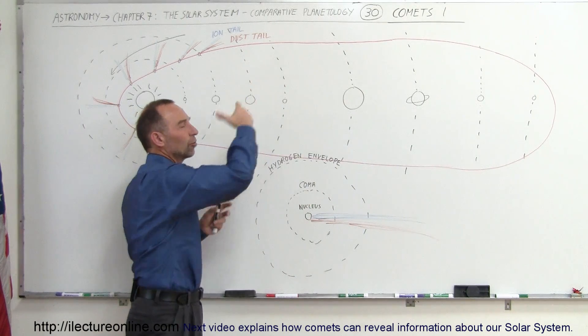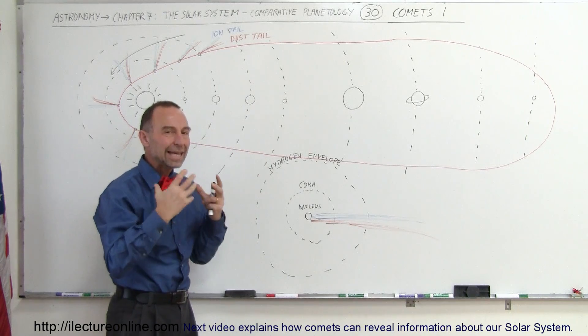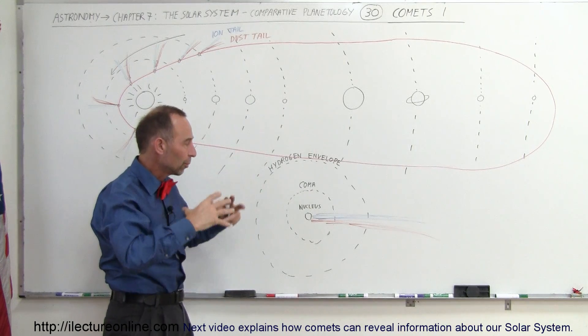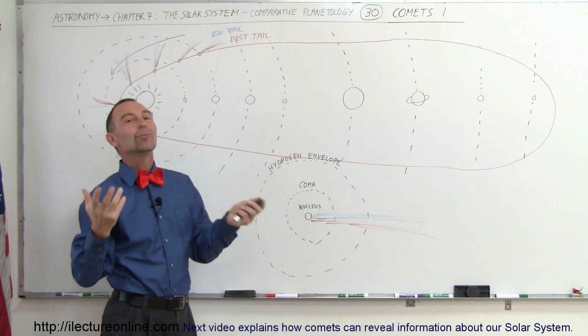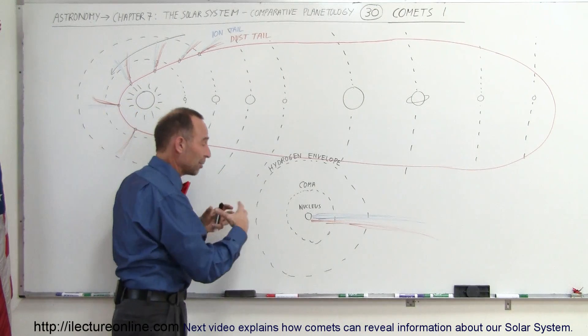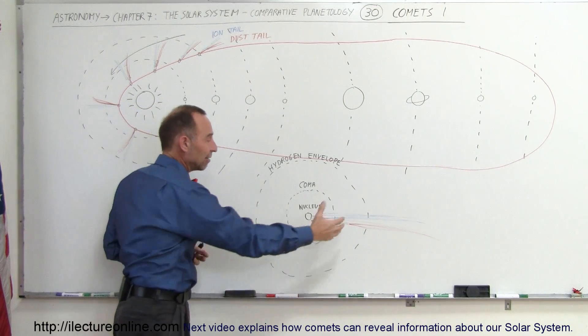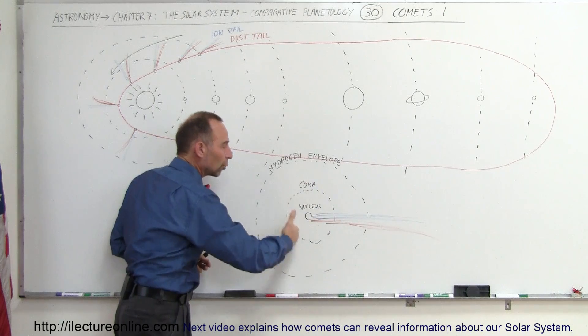This is a region, as the comet gets closer to the sun, from the heat from the sun, particles get dislodged, and they form a big spherical region around the nucleus.